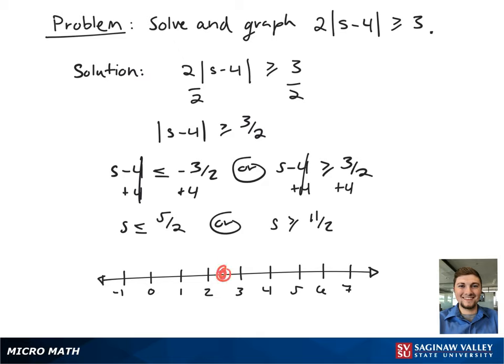Looking at our number line, we have a closed circle from 5 halves to negative infinity, and a closed circle from 11 halves to positive infinity.